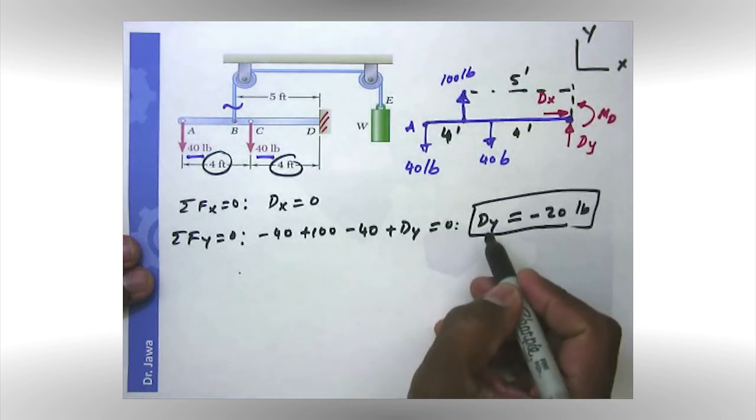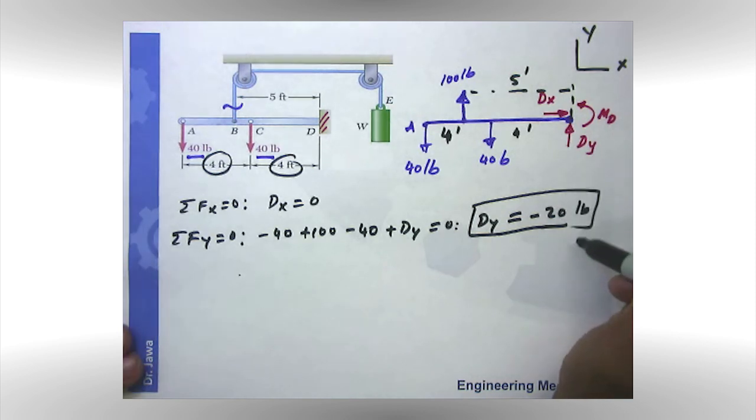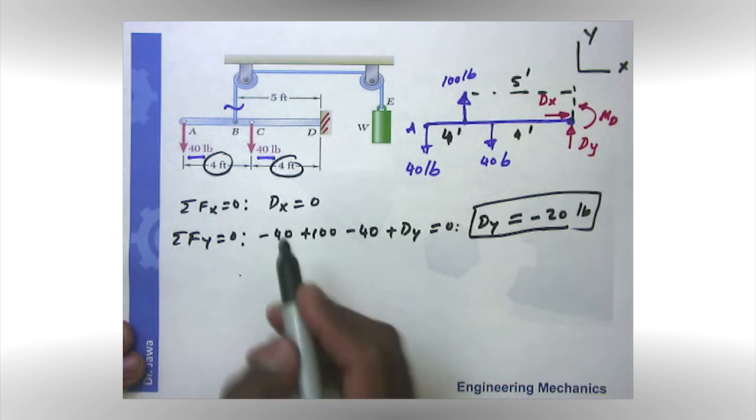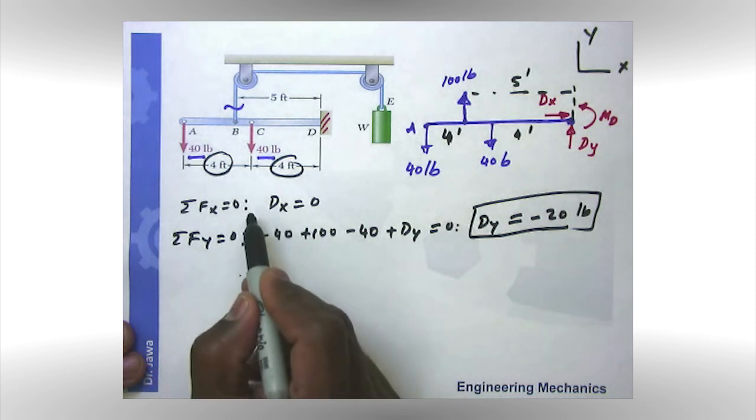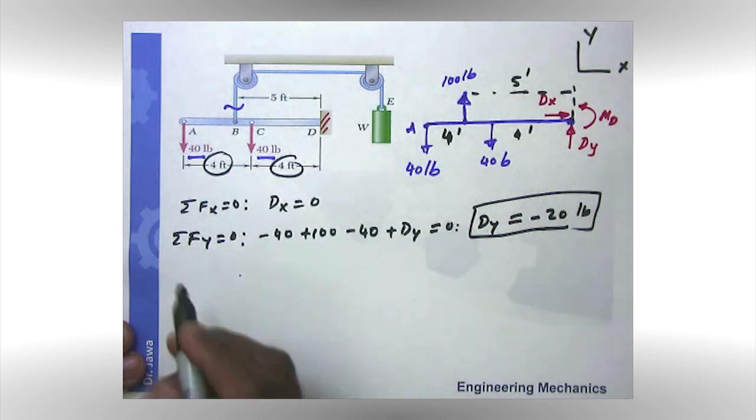If it is negative 20 pounds, that means my assumed direction of D_y is incorrect. It is going to be the other way. Please do not change the free body diagram at this point in time because this equation is based on the free body diagram. So you never change the free body diagram when you solve the problem. We will specify the correct directions later.